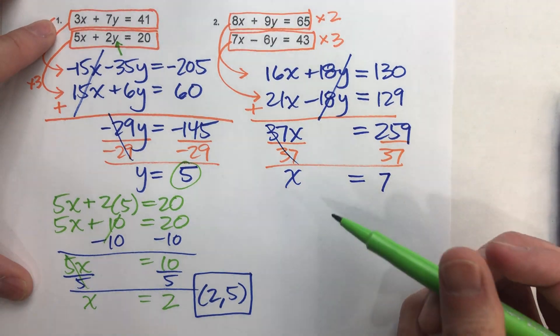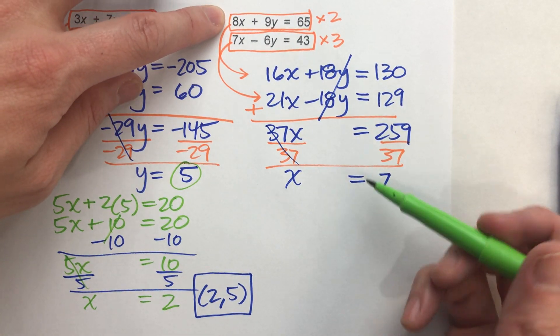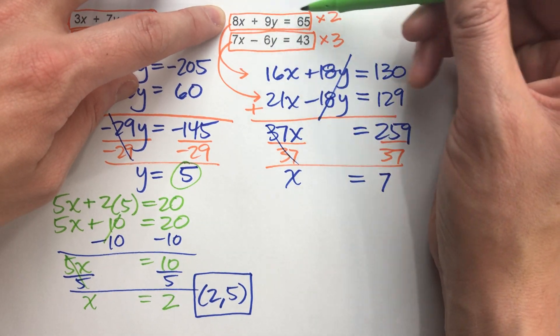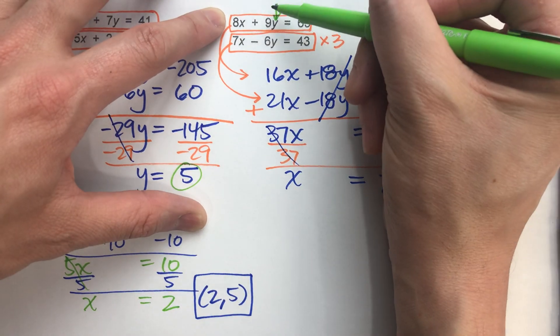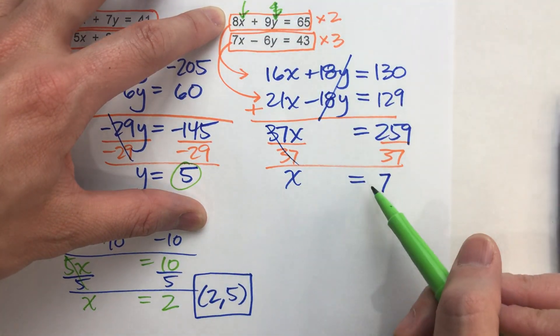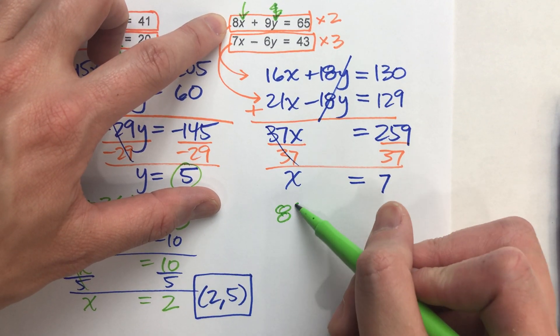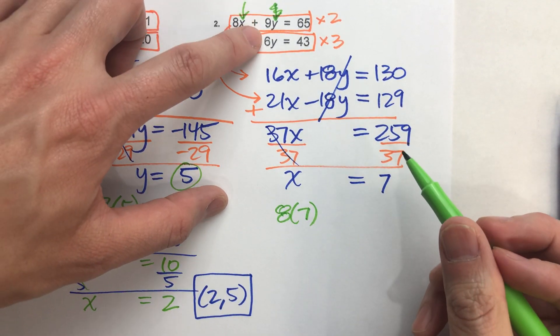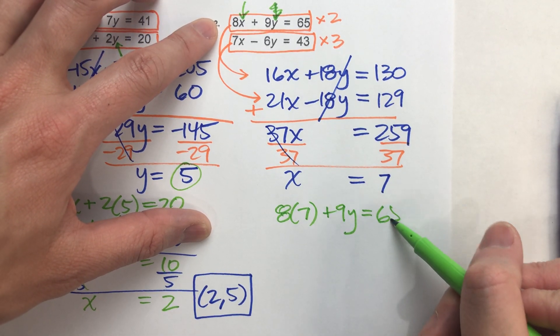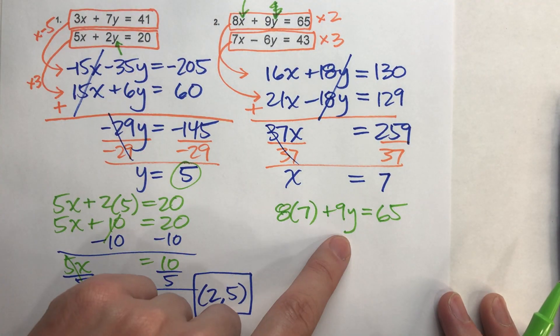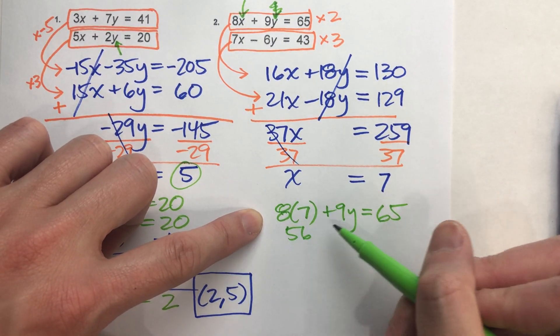Now, to get y, let's put x back into the original equation. I think the first one's a little bit easier because then I don't have to deal with any kind of negatives. So I'm just going to stick it in for, not for y, we're putting it in for x. x is 7. So we're going to do 8 times x, in this case, 8 times 7, plus 9y equals 65. Solve this, and I've got y. 8 times 7 is 56.